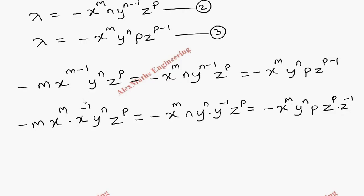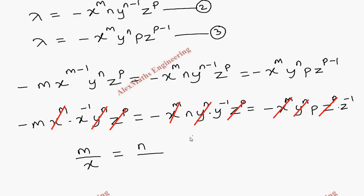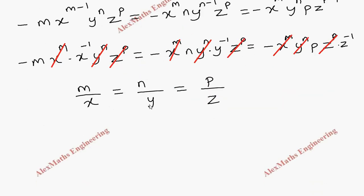We can cancel x^m, y^n, and z^p from all terms, and remove the negative signs. This gives m/x = n/y = p/z, a relation between x, y, and z.